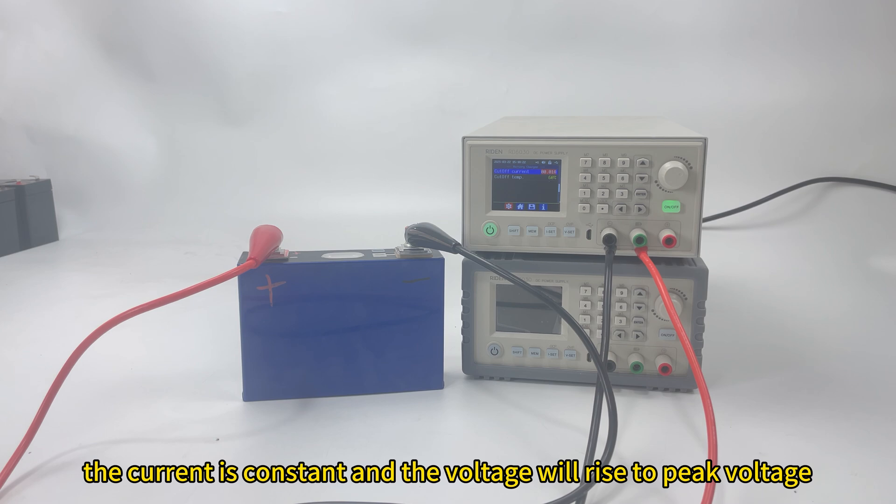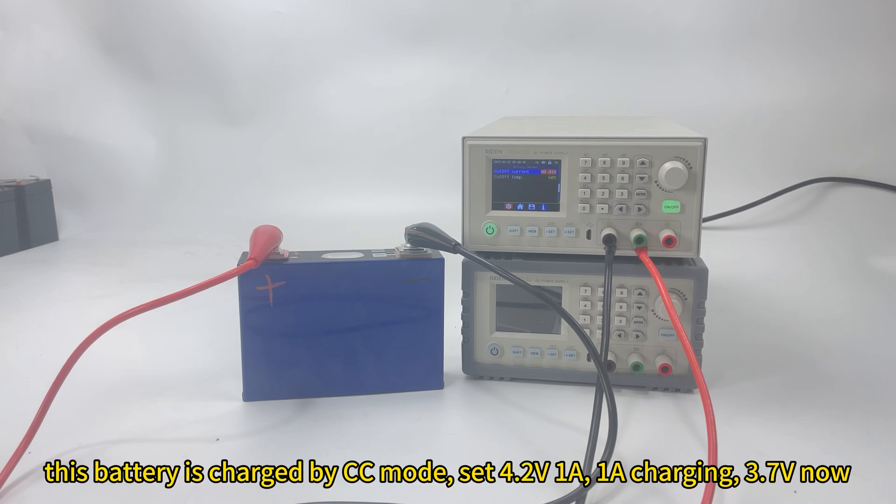At first, it is constant current. The current is constant and the voltage will rise to the peak voltage. You can see now it is CC mode and it is constant current mode.